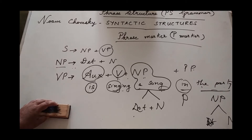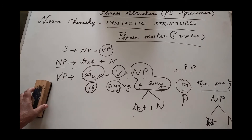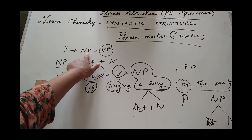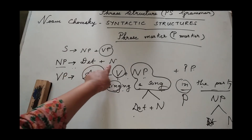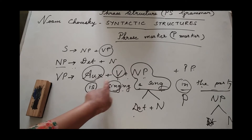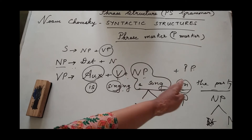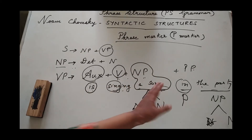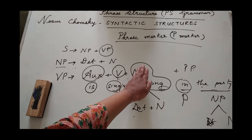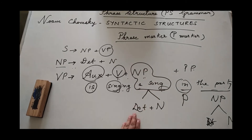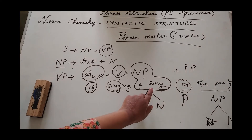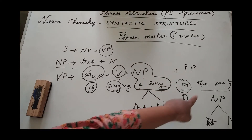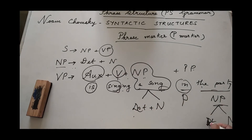So basically, you need to know that a sentence can be rewritten using a rewrite rule as: sentence equals noun phrase plus verb phrase. A noun phrase can be rewritten as determiner plus noun. A verb phrase can be rewritten as auxiliary plus verb plus noun phrase. In some cases there may be a prepositional phrase as well. For example, 'is singing a song': 'is' is the auxiliary, 'sing' is the main verb, and 'a song' is a noun phrase, further split into determiner and noun.